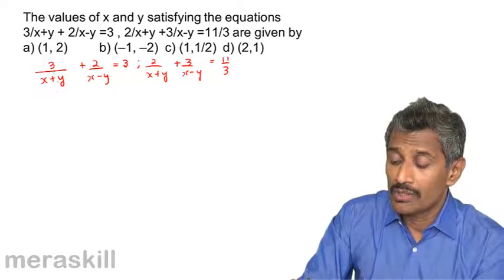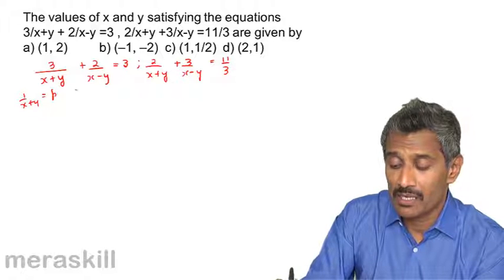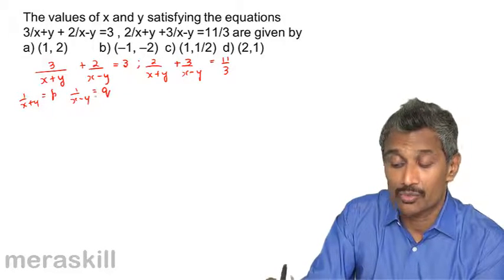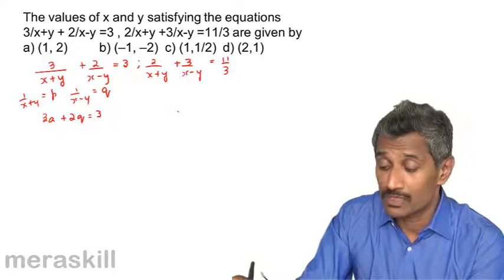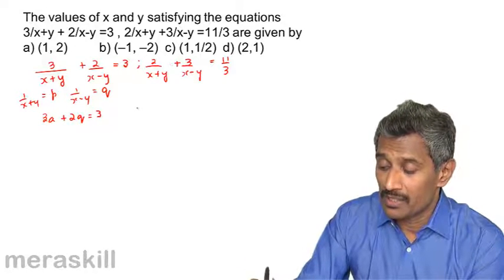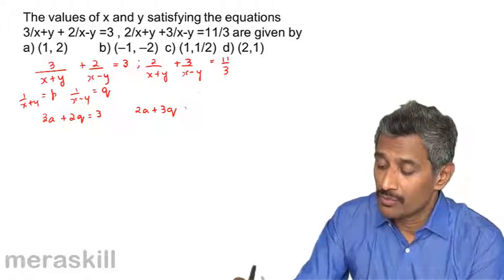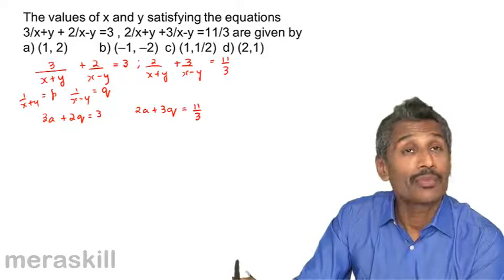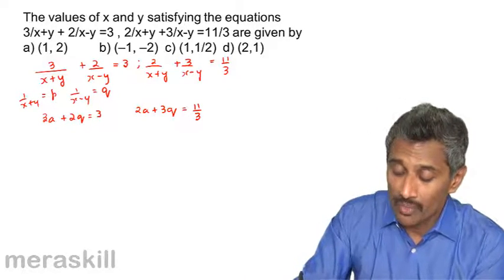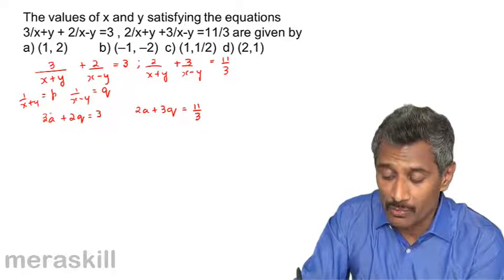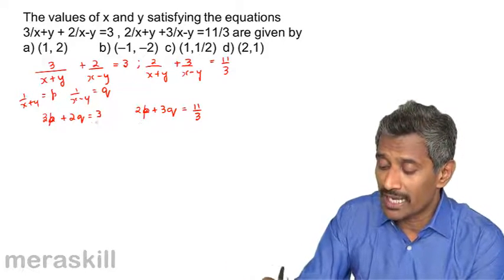We let 1 by (x plus y) equal p and 1 by (x minus y) equal q, so the equations become 3p plus 2q equals 3 (equation 1) and 2p plus 3q equals 11 by 3 (equation 2). Now we can solve this system.